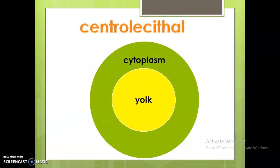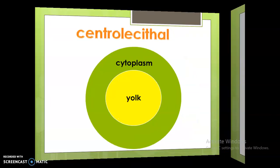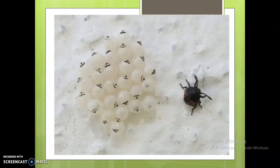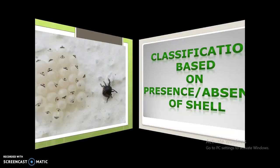In centrolecithal eggs, as the term suggests, the yolk is centrally concentrated — it is in the center, surrounded by cytoplasm. Many arthropod eggs, like insects, are examples of centrolecithality.